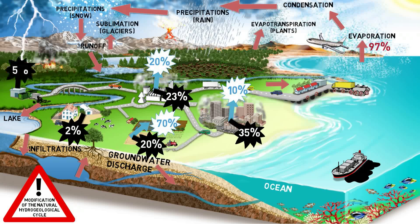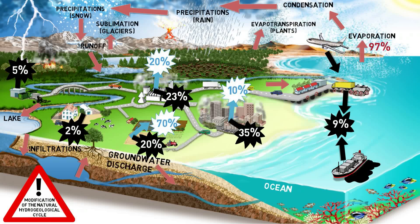Dumps and landfills with inappropriate leachate collection and treatment systems can contaminate groundwater supplies. Transportation also contributes significantly to the pollution of the hydrosphere in various ways, ranging from air pollution fallouts to the construction and maintenance of infrastructure such as roads, railways, and ports.